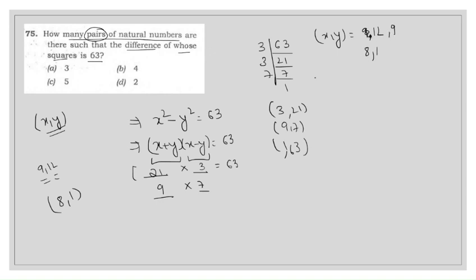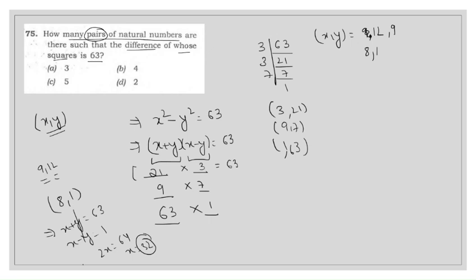For the third case, x+y = 63 and x-y = 1. Solving: 2x = 64, so x = 32. Substituting back, y = 31. So the third pair is (32, 31) — their sum is 63 and their difference is 1, whose product is again 63. The total number of possible pairs is 3, so the answer is 3.